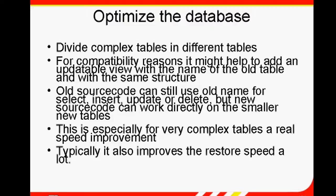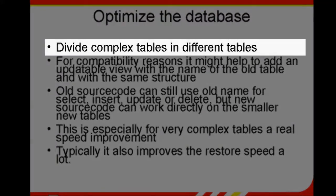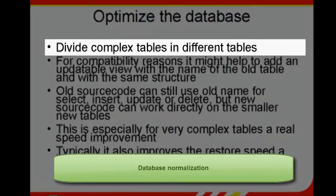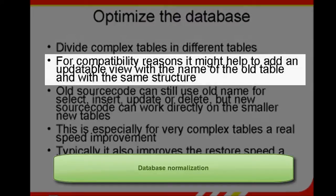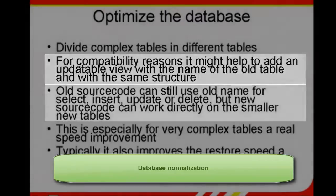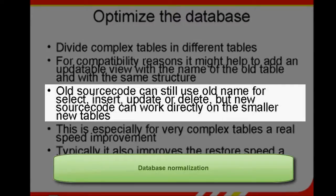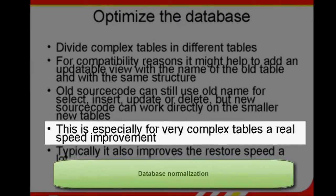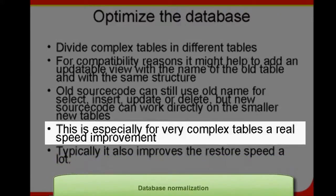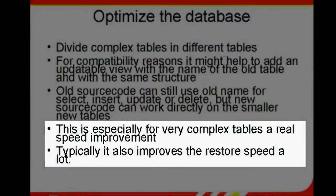Parameters for optimal performance: optimising the database. Split complex tables into several smaller ones — database normalisation. It often makes sense to divide large and complex tables up into smaller ones. Downward compatibility can be achieved using updatable views, as older applications can usually work with views which have the old table names and structure. The old source code can still use the old names for select, insert, update or delete. The new source code can work directly on the new smaller tables. This can provide a real improvement in speed, especially in the case of very complex tables. Typically, it also improves the restore speed considerably.